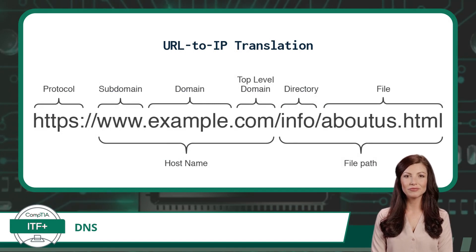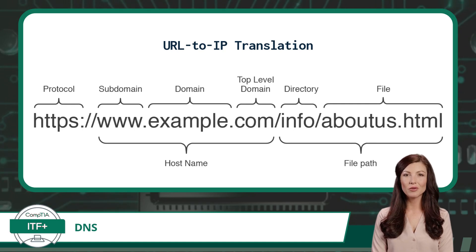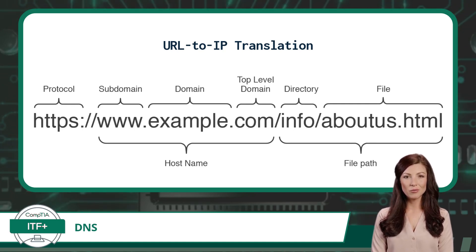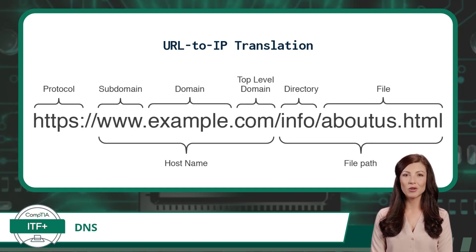So how does DNS translate a website name to its IP address? It starts when you type a website name — known as a URL, or Uniform Resource Locator — into your browser. The URL has multiple parts. Using the graphic behind me and starting at the left, there is the protocol, the subdomain, the domain name, the top-level domain, and the file path.